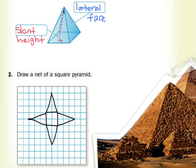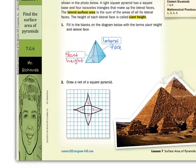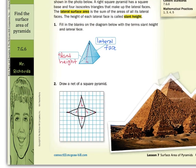Now we do have our slant heights that we can represent here too, for each of these triangles. And there you go — that is a net of the square pyramid.